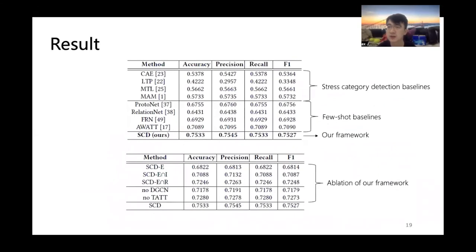To evaluate the effectiveness of our framework, we compare our results with both stress category detection baselines and few-shot baselines. From the experiment results in the fourth table, we can see ICD achieves over 75% on accuracy and F1 with over 4.3% improvement compared with the best baseline, proving that our meta-learning method can succeed to learn a new stress category with only few samples. We do the improvement to the fact that our meta-learning framework is well designed with dependency graph convolutional neural network, tweet attention, and the mixture of experts.